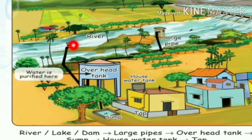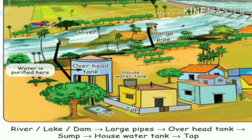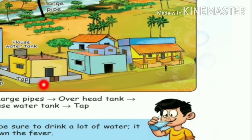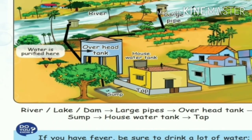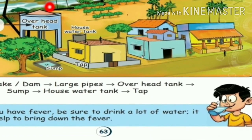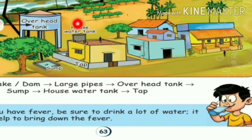The water is purified automatically in the tank. You can use the large pipe. Next, we take a connection with a tap. House water tank, house sump — it is a color connection. River, lake, sump, large pipe, overhead tank, sump, house water tank, tap. First river, next lake — you can store via large pipe, then overhead tank, then sump, then house water tank, then tap.